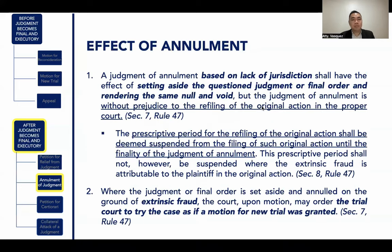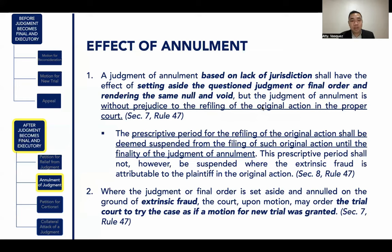An annulment of judgment based on lack of jurisdiction shall have the effect of setting aside the questioned judgment or final order and rendering it null and void, but without prejudice to the refiling of the original action in the proper court. The prescriptive period for the refiling of the original action shall be suspended from the filing of the original action until the finality of the judgment of annulment, but shall not be suspended where extrinsic fraud is attributable to the plaintiff in the original action. Where the judgment is set aside on the ground of extrinsic fraud, the court upon motion may order the trial court to try the case as if a motion for new trial had been granted.